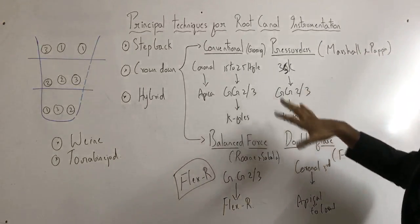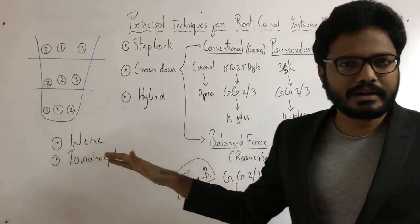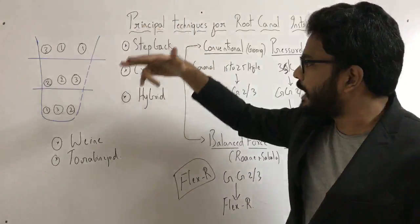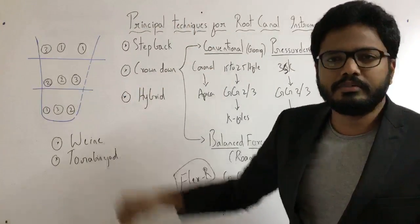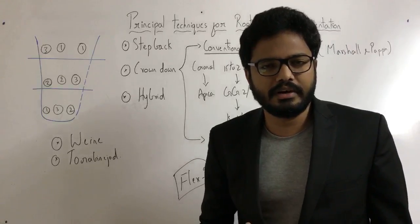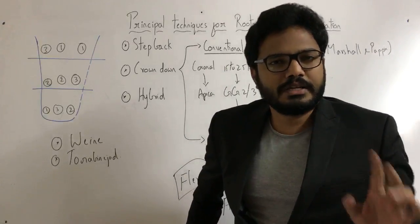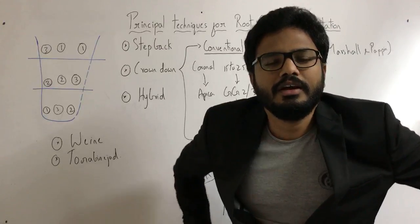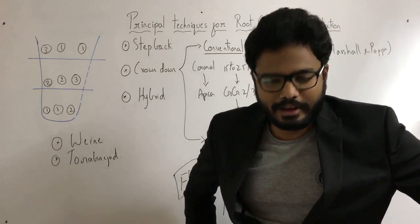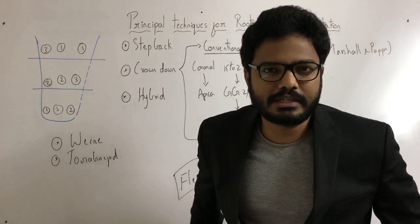The double-flare technique uses K-files larger to smaller to proceed from coronal to apical, then again K-files from apical to coronal — a combination of crown-down and step-back. Hybrid technique starts with coronal, then apical, then middle third. We'll go into details of all these techniques in our textbook discussion. This is in brief about various principal instrumentation techniques of root canal instrumentation. Any questions can be dropped and we'll proceed to textbook discussion.